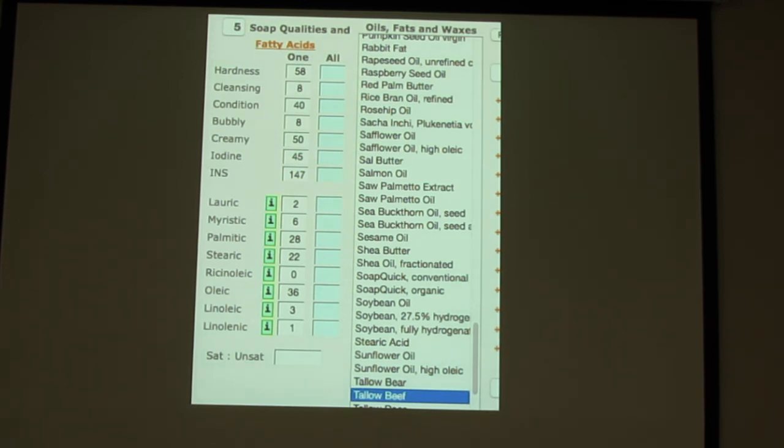Beef tallow is a lot like lard, except it's even harder. It has a higher percentage of palmitic and stearic acids. A lower percentage than of the unsaturated fatty acids. So it makes a very hard soap. Also, it's somewhat cleansing. It has some myristic and lauric acids. Fairly fast to trace, but not as fast as palm oil. And certainly not as fast as palm kernel oil. So I like to use quite a lot of tallow in a lot of my soaps. It makes a very hard, very nice soap.